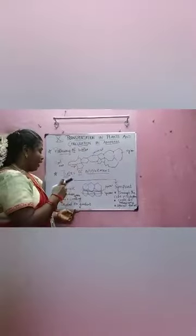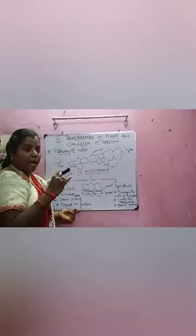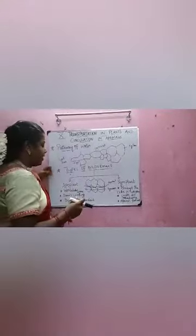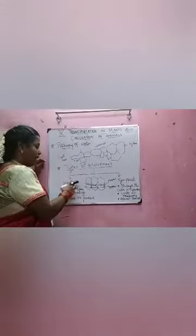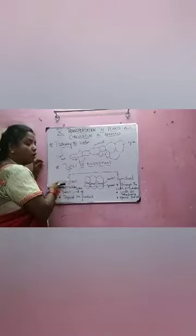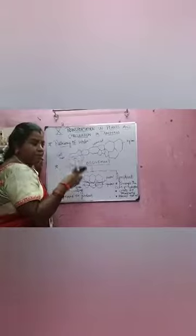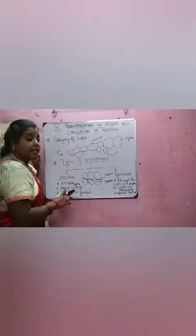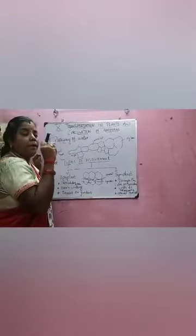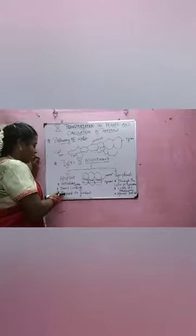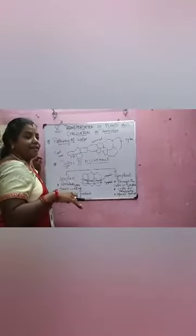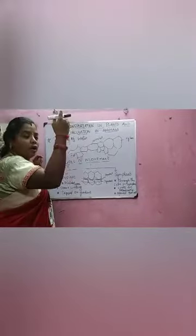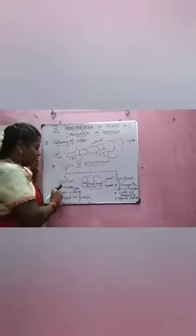To summarize: apoplast movement takes place through intercellular space; symplast movement takes place through the cell. The three important points of apoplast: first, the movement takes place through the intercellular space; second, it does not cross through the cell; third, it depends on the gradient — the quantity of water content. If the quantity of water increases or reduces, its movement will differ, which is why it depends on the gradient.